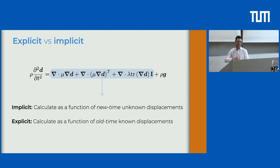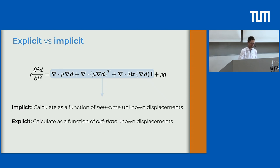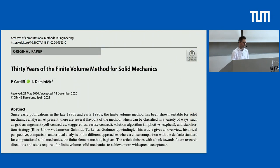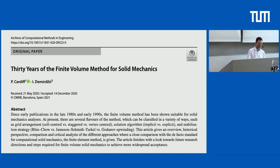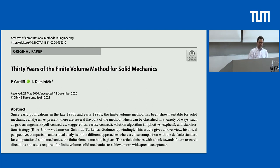Explicit versus implicit methods: the key decision is whether you write divergence terms in terms of unknowns (implicit) or knowns at the old time (explicit). Explicit methods are limited by the Courant number and require very small time steps. Implicit methods are unconditionally stable. For more detail, there's a review paper published last year by myself and Ismet Demirdžić — I started it before I had kids and it was published when I had two. Ismet Demirdžić was the primary developer of StarCD, the predecessor to StarCCM+, so he really knows his finite volumes.